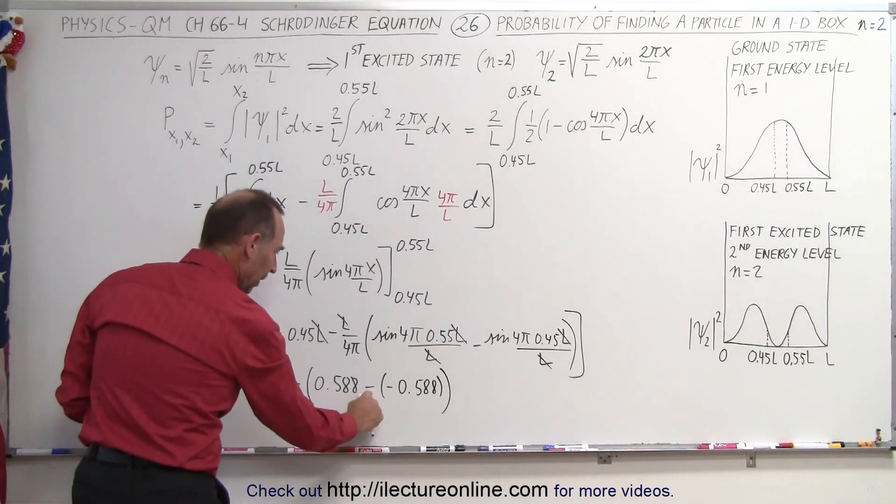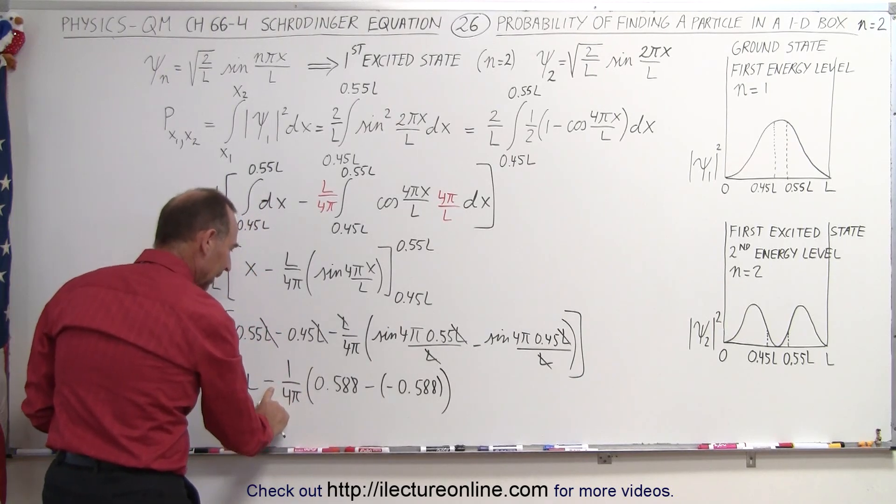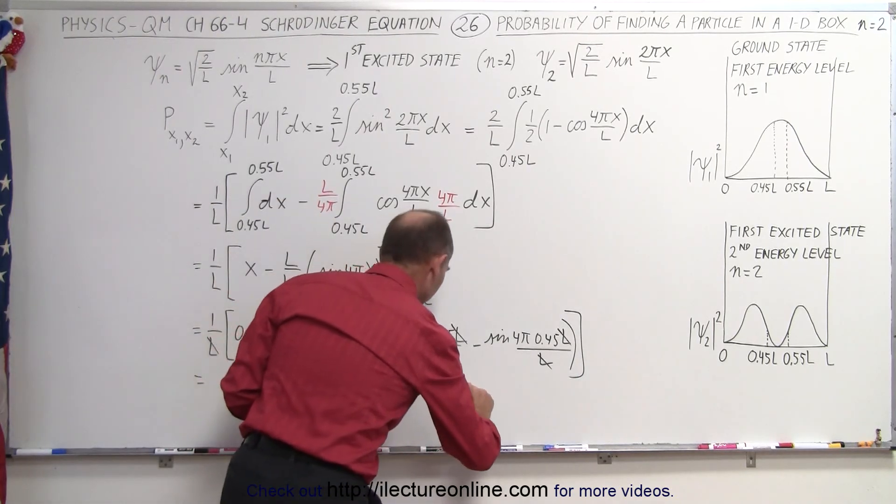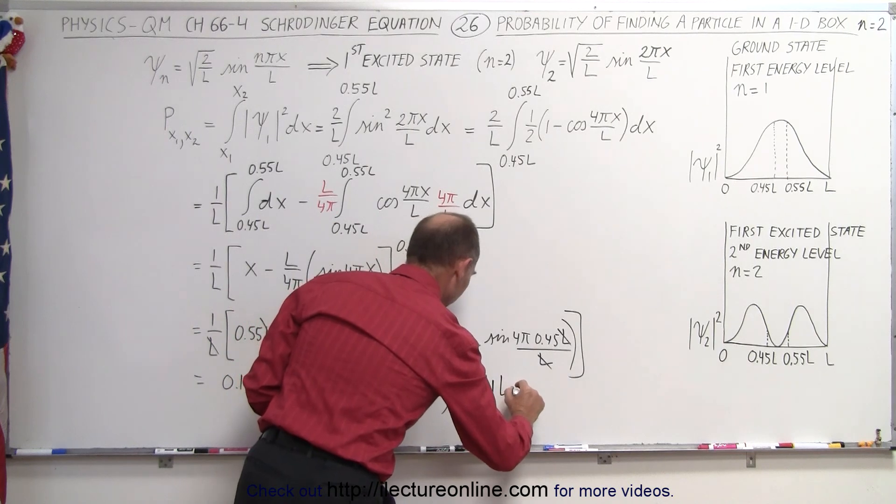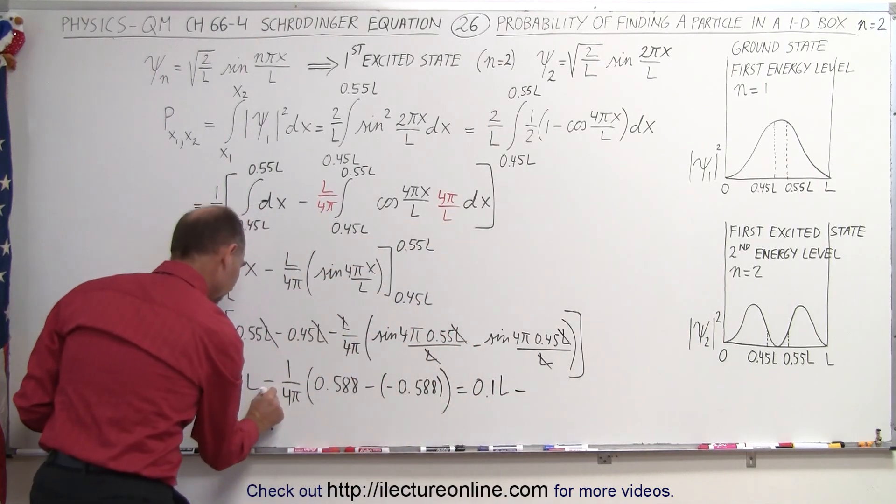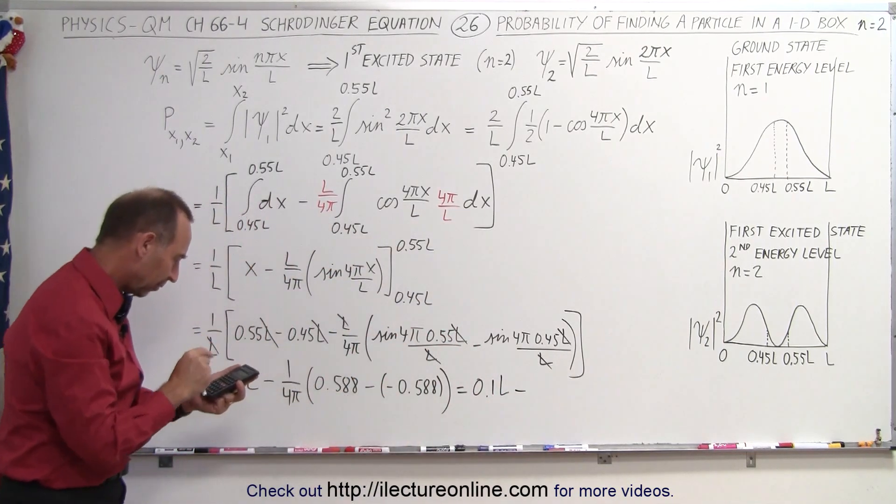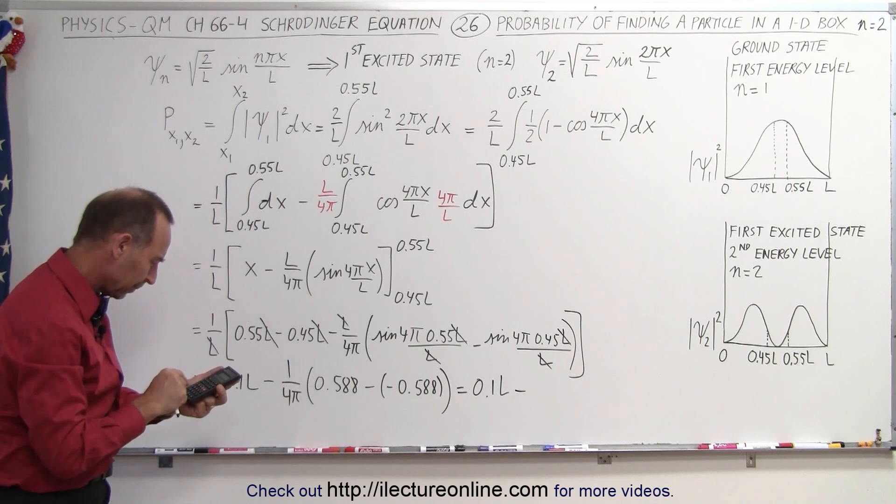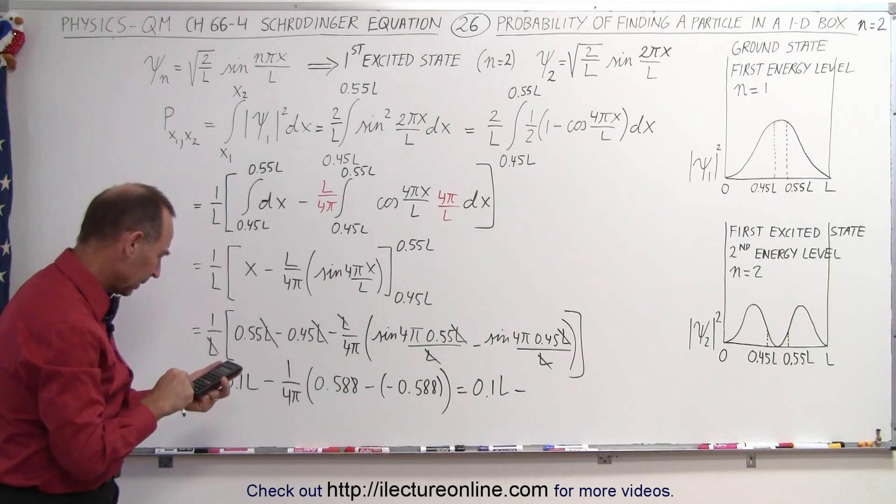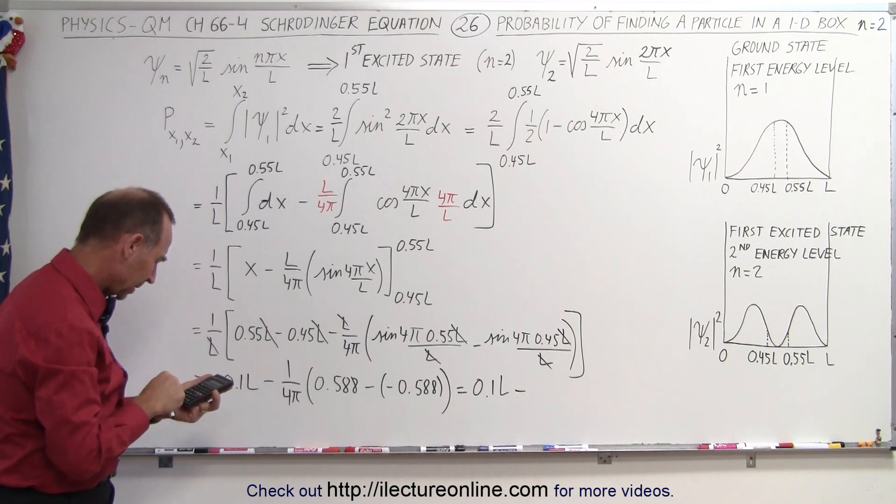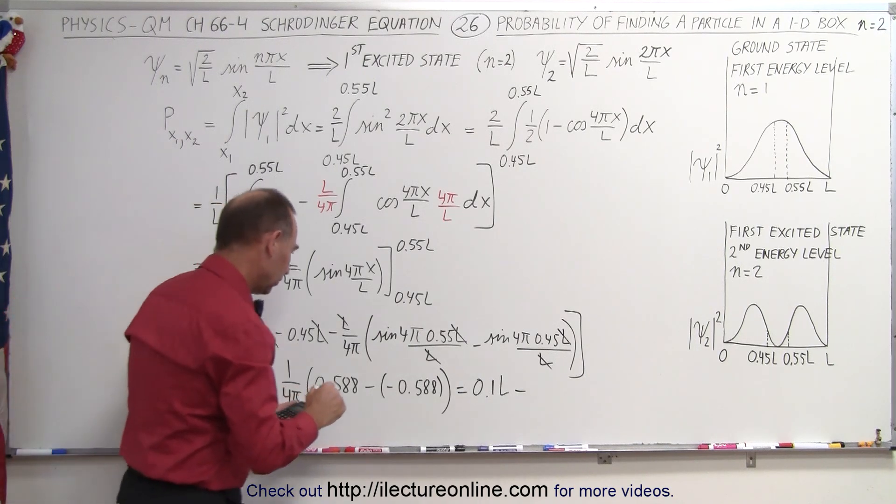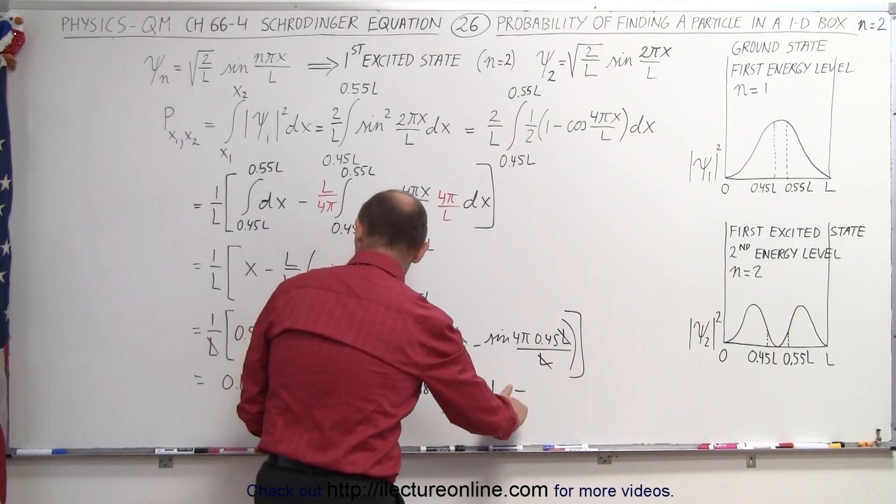Now notice that this will give us a positive and then this will become negative again. So this becomes equal to 0.1 minus this quantity right here. So let's multiply times 2 and divide by 4 and divide by π and so that becomes, and the L is gone. No L anymore.